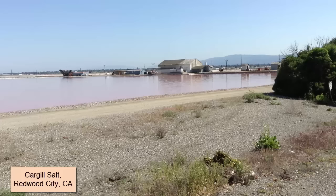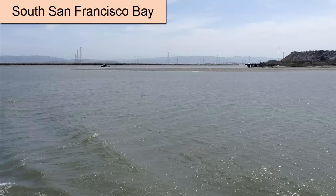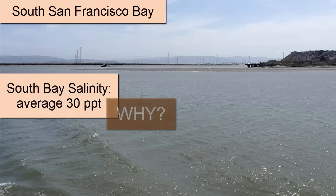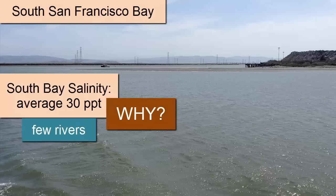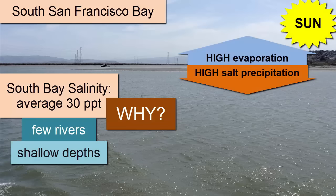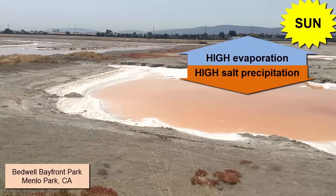While few of these ponds are still active, most are still kept separated from the rest of the South Bay. The water down there is close to the salinity of seawater. It's 30 parts per thousand, primarily because of the low river input, but also because of the shallow depths and the high evaporation rates.